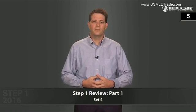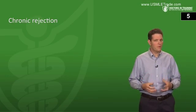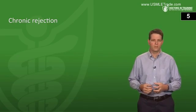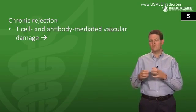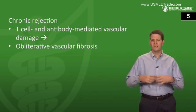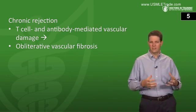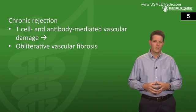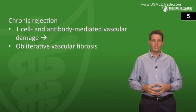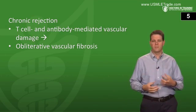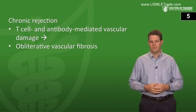Next: a kidney transplant patient begins to experience renal failure seven years after receiving her kidney transplant. What type of rejection is this, and how is it mediated? Based on the time frame, this is chronic rejection, which is caused by T-cell and antibody-mediated vascular damage resulting in an obliterative vascular fibrosis. You have fibrosis of the graft tissue and fibrosis of the blood vessels, mediated by T-cells and antibodies.